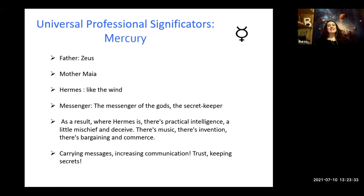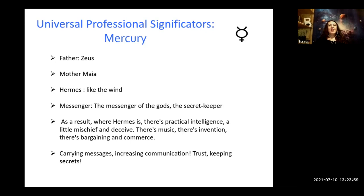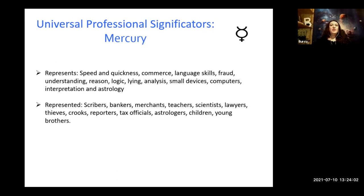As a result, where Hermes is, there is practical intelligence, a little mischief and deceit, there's music, invention, bargaining and commerce, carrying messages, increasing communication and trust, and keeping secrets. As a profession, Mercury represents speed and quickness, commerce, language skills, fraud, understanding, reason, logic, lying, analyzing, small devices, computers, interpretation, and yes, astrology.